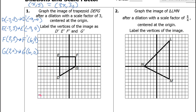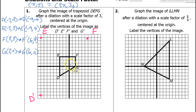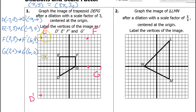Negative 9 comma negative 9 is going to be right there — that will be D prime. Negative 9, positive 9 — that will be E prime. Then 6 comma 9 is right there — that will be F prime. And 6 comma 0 is right here — that will be G prime. And of course I'll just connect the dots.